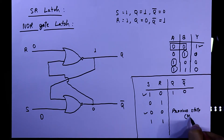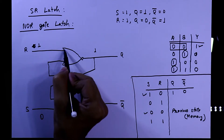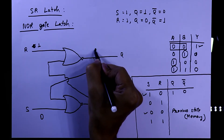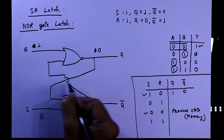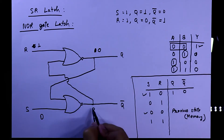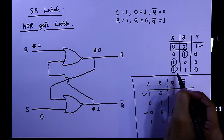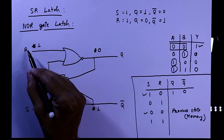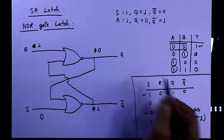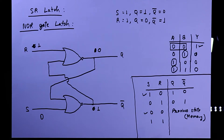Now the second condition: R=1. Since any input of 1 gives output 0, the second NOR gate outputs 0. This 0 arrives at the first NOR gate; with both inputs 0, the output is 1. That 1 feeds back; with both inputs 1, the output is 0. So when R=1 (reset), Q=0 and Q-bar=1.